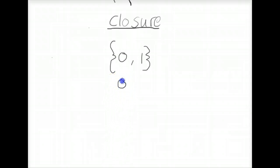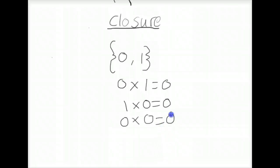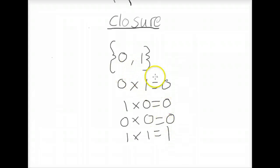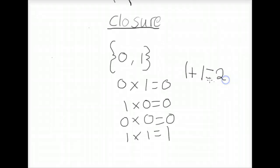The set {0, 1} is closed under multiplication because you can multiply any combination of those two numbers and not get a number outside the set. For example, 0 times 1 equals 0, 1 times 0 equals 0, 0 times 0 equals 0, and 1 times 1 equals 1 — all products are in the set. However, we cannot say it's closed under addition because 1 plus 1 equals 2, and 2 is not in the set.